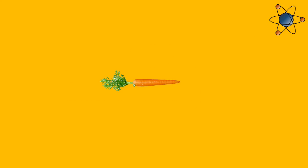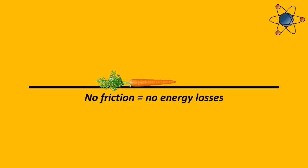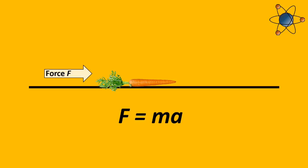Consider my carrot, and this carrot is on a frictionless flat surface, and I'm going to apply a constant force to this object. According to Newton's second law, f equals ma, the carrot will accelerate in the direction of the force. And because I'm applying constant force, the carrot will have a constant acceleration.